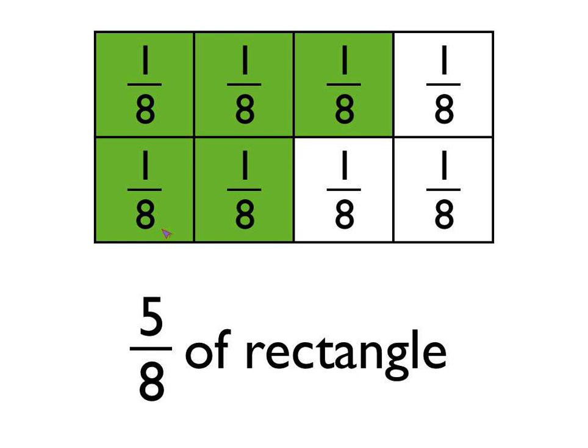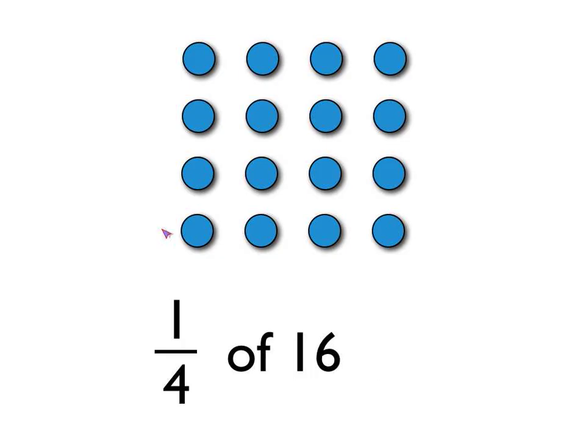That means, if we're working in eighths, we take the rectangle, we divide it into eight equal-sized pieces, and we want five of them because we wanted five-eighths of the rectangle. So, five of those eighths are shaded in, as you can see. When we're talking about calculating a fraction of an amount, we're using the same idea, but we're doing it with numbers, rather than thinking about the amount of a shape that's shaded in.